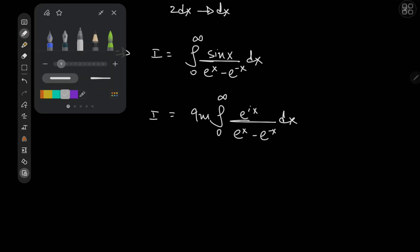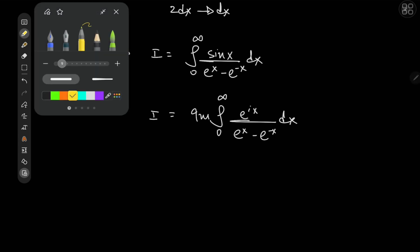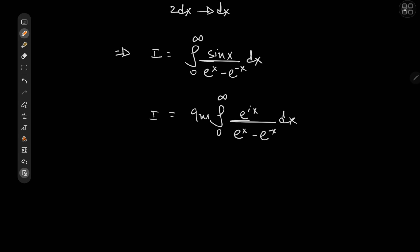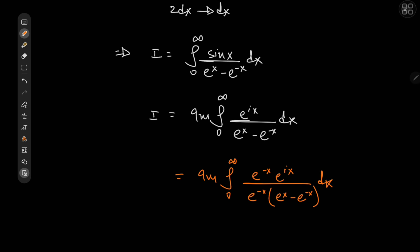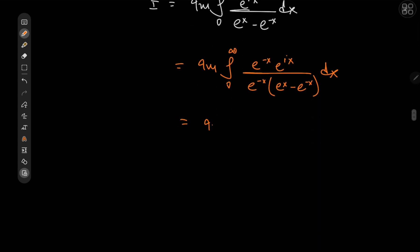To invoke a geometric series, we multiply numerator and denominator by e^{-x}. That gives us the imaginary part of the integral from zero to infinity of e^{-x} times e^{ix} over (e^{-x} times e^x minus e^{-x}) dx, which yields the imaginary part of the integral from zero to infinity of e^{-(1-i)x} over (1 minus e^{-2x}) dx.